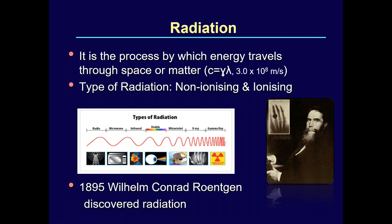All electromagnetic radiations, including light waves, share a common principle: they all travel at the velocity of light, which is 3 × 10⁸ meters per second. The velocity of light C equals frequency (ν) times wavelength (λ). Since velocity is constant, wavelength and frequency are inversely proportional — if the wavelength is high, the frequency is lower, and if frequency is high, the wavelength is lower.